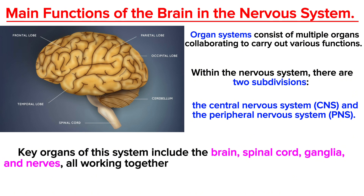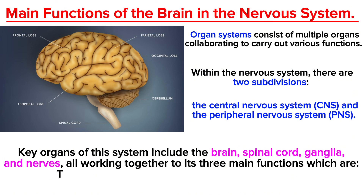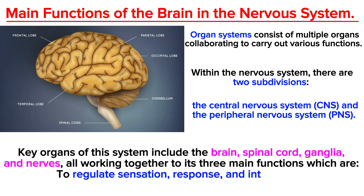All working together so that its three main functions can be achieved, which are to regulate sensation, response, and integration. So those are the three main functions of the brain — let's look into that right now.